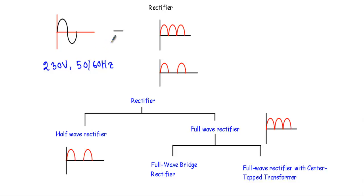To work with our electronic equipment we have to supply DC voltage. We have two options: either we use a battery, or some system which can convert the AC supply into DC supply. The system used for this purpose in the power supply section of any electronic equipment is called a rectifier.